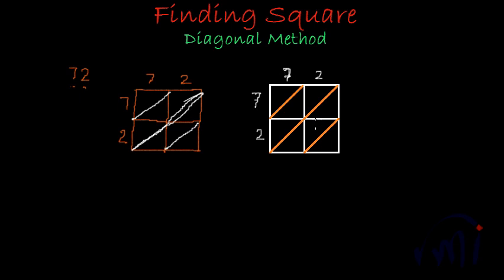Now we are going to multiply the first row with all the columns. When seven gets multiplied by the first column, seven sevens are 49. 49 has two digits, so the number at tens place — that is four — I'll write above the diagonal, and the number at units place — nine — I'll write below the diagonal.